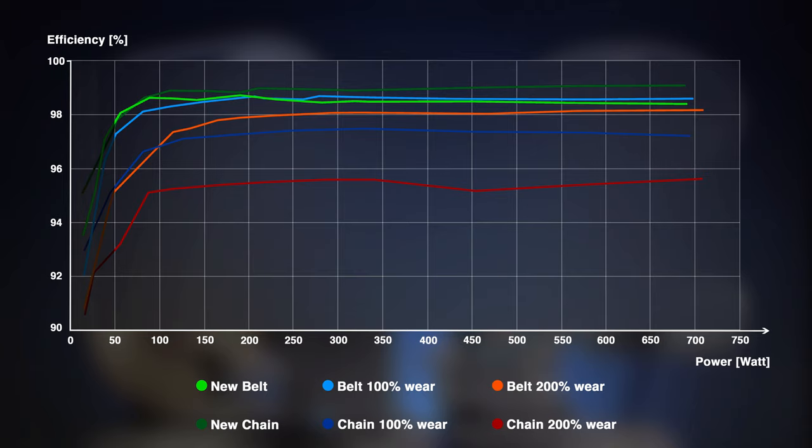If we have a look at the brand new drivetrains, it's the very low power rates below 30 watts where the belt has an inferior level of efficiency indeed. This is because it needs a certain tension to work properly, whereas the chain may always have some slack. This tension creates some friction losses, but they get smaller percentage-wise as we increase power.